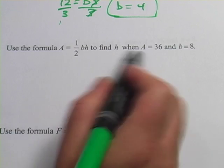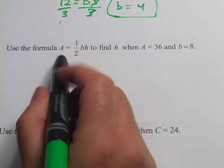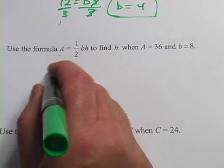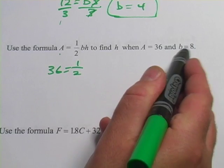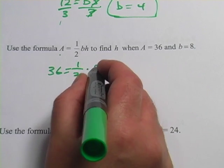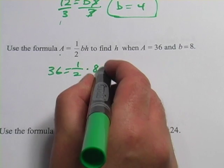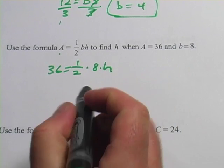So we'll simply plug these numbers that we have in. Instead of A, I'll write 36. Now my b is 8, so times 8, and then times h. And h is what we're looking for.